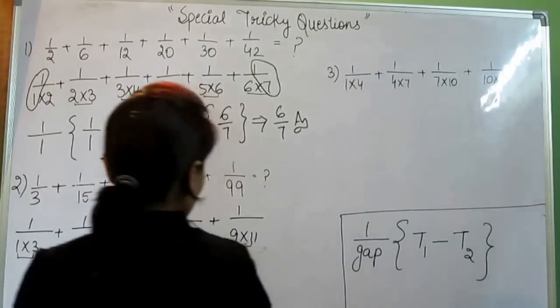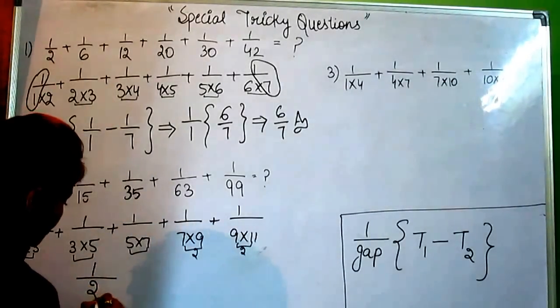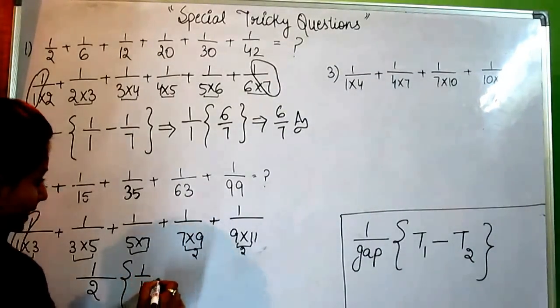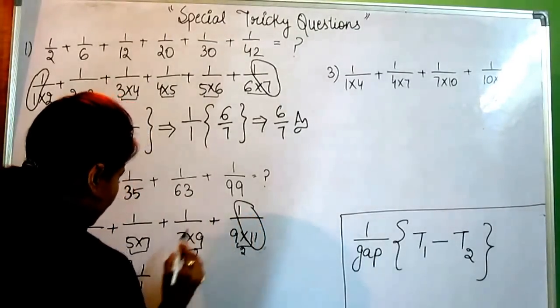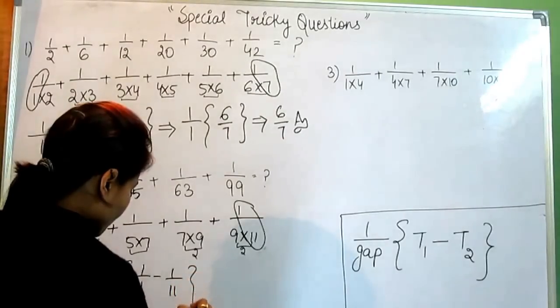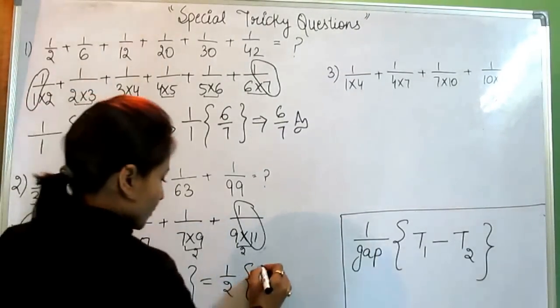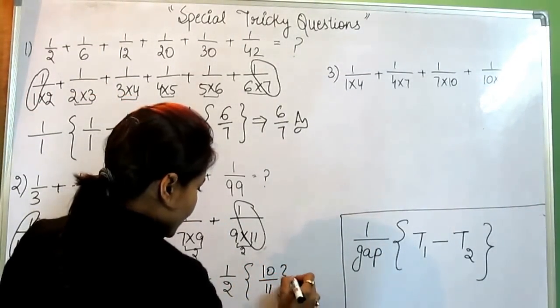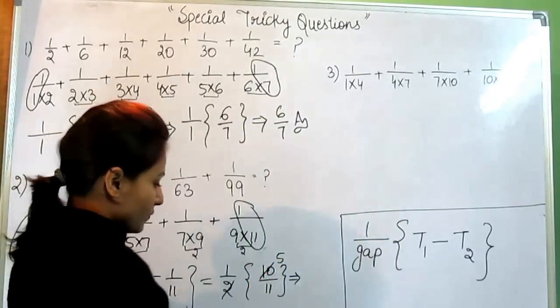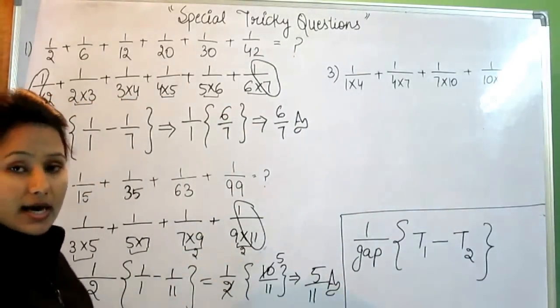So now, apply this formula. Now, we are going to apply this formula: 1 by, what is the gap? Gap is 2. T1, T1 is this series, this number: 1 by 1. And last is 1 by 11. When you solve, when you LCM these two numbers, you get 10 by 11. And further, if you solve, this will be divided by this. So your answer would be 5 by 11. So this is the answer.